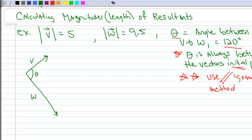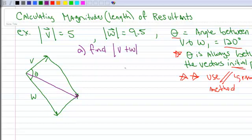So that means I'm going to construct, as best I can here, a parallelogram. And then let me draw my resultant. So there's the resultant right there. What we want to do here is we want to find the length of the resultant. So this is going to be part A. Find the length of V plus W.